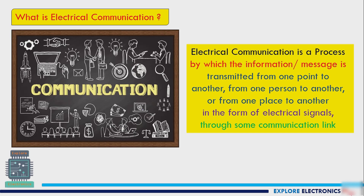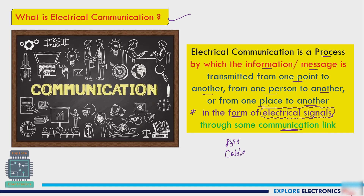Let us look at the electrical communication definition. Electrical communication is a process of exchanging information or messages transmitted from one point to another, from one person to another, or from one place to another, but the transfer of information is in the form of electrical signals. We transmit this through a communication link — which can be air for wireless communication, a cable for wired communication, or optical fiber for light-based communication.